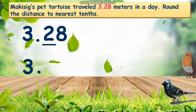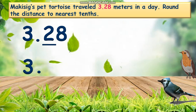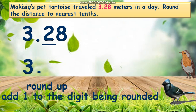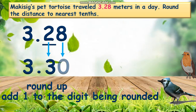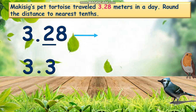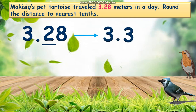Rounding 3 and 28 hundredths to the nearest tenths: the first thing we will do is find the digit of the rounding place value, and this is digit 2. Next, we will find out which digit is to the right of it, and it is 8. Since it is greater than 4, we will round up or add 1 to digit 2 and it will become 3. The remaining digits to their right will be 0 or we can drop it. Therefore, when we round off 3 and 28 hundredths to the nearest tenths, the answer is 3 and 3 tenths. So Moccasig's pet tortoise travelled 3 and 3 tenths metres in one day.